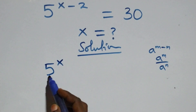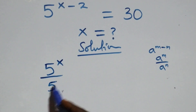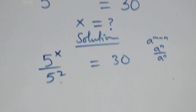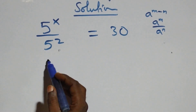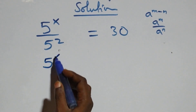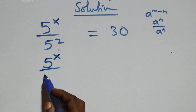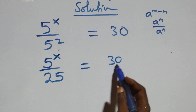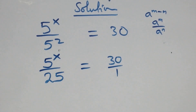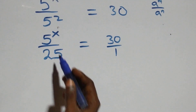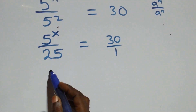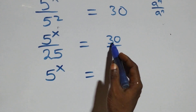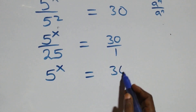We can write this as 5 raised to power x over 5 squared equals 30. That is, 5 raised to power x over 5 times 5, which is 25, equals 30 over 1. When we cross multiply, 5 raised to power x equals 30 times 25.